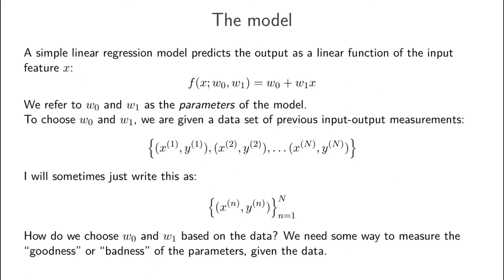A simple linear regression model predicts the output as a linear function of the input feature x. That basically means that the output of our model f, given some setting of the parameters, will just be a straight line. In this case, our parameters are w0 and w1, which specify this line. To choose w0 and w1, we are given a dataset of previous input-output measurements — the first, second, and up to the nth input-output pair. So given this data, how do we choose w0 and w1?